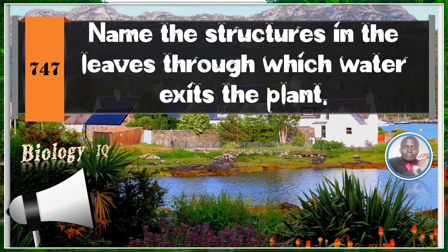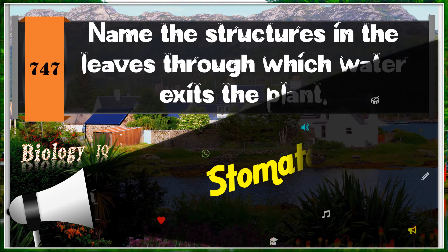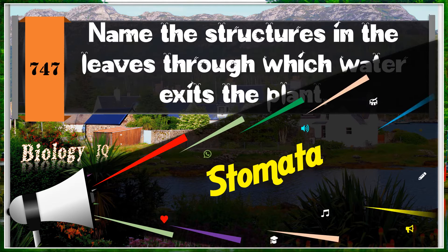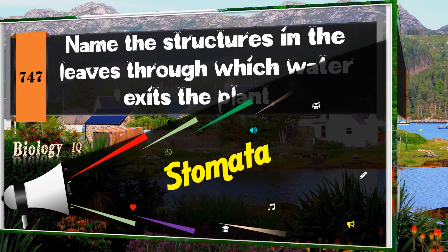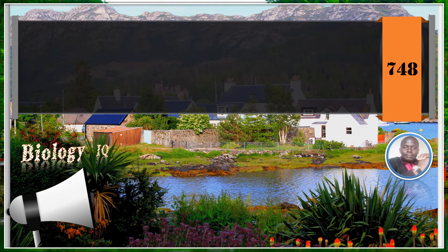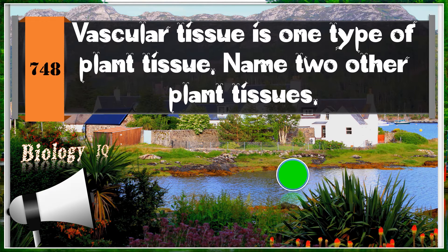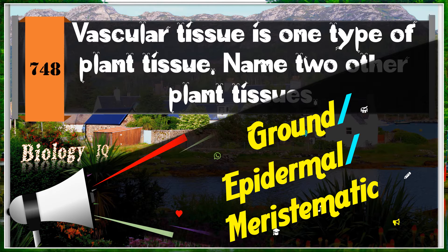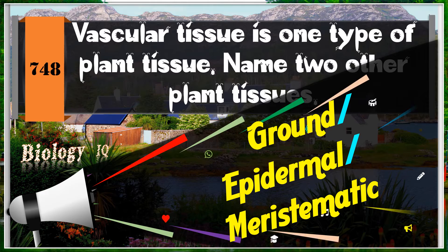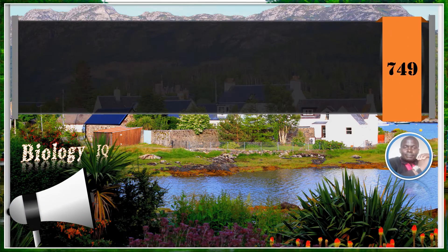Question 15: Name the structures in the leaves through which water exits the plant. Stomata. Question 16: Vascular tissue is one type of plant tissue. Name two other plant tissues. Ground tissue. Epidermal tissue. And meristematic tissue.